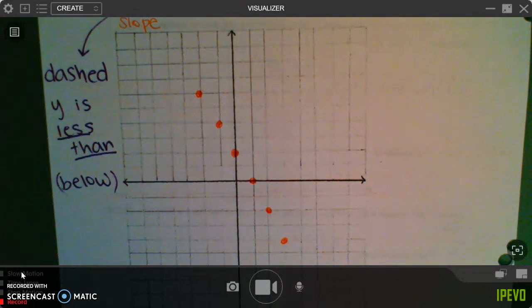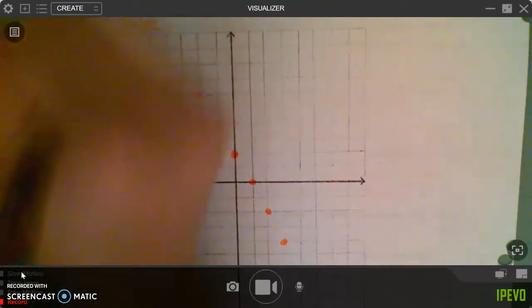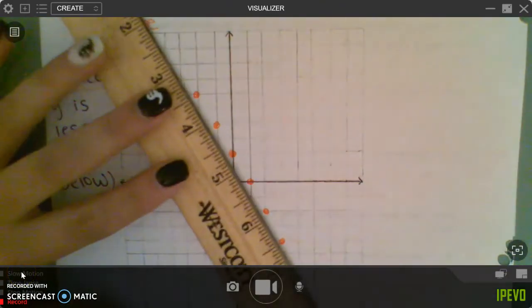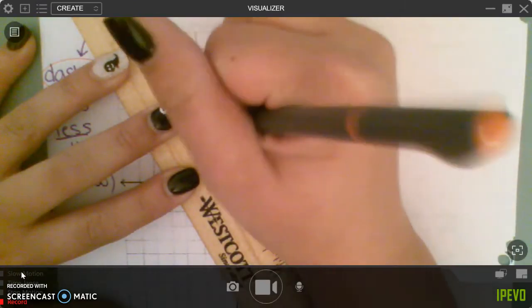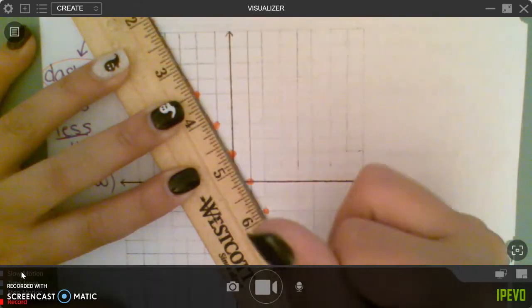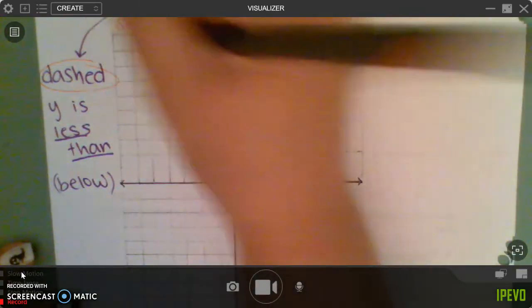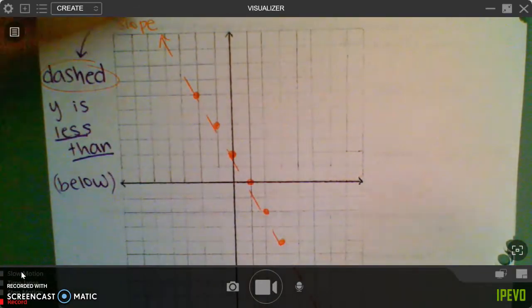Then using a ruler, I want to connect the dots. But remember, when you connect the dots, we are doing dashed. Don't forget, we are dashing it. So I'm going to connect my dots, and when I do so, I'm going to make them dashed. And make sure you're going completely across the whole graph.